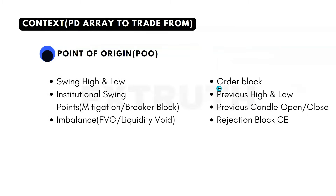After identifying drawn liquidity, we frame our context — the point of origin (POO) leading to the draw on liquidity. This includes swing highs and lows, institutional swing points, mitigation or breaker blocks, imbalance or fair value gaps, liquidity voids, order blocks, previous highs and lows, previous candle open or close, and rejection blocks.